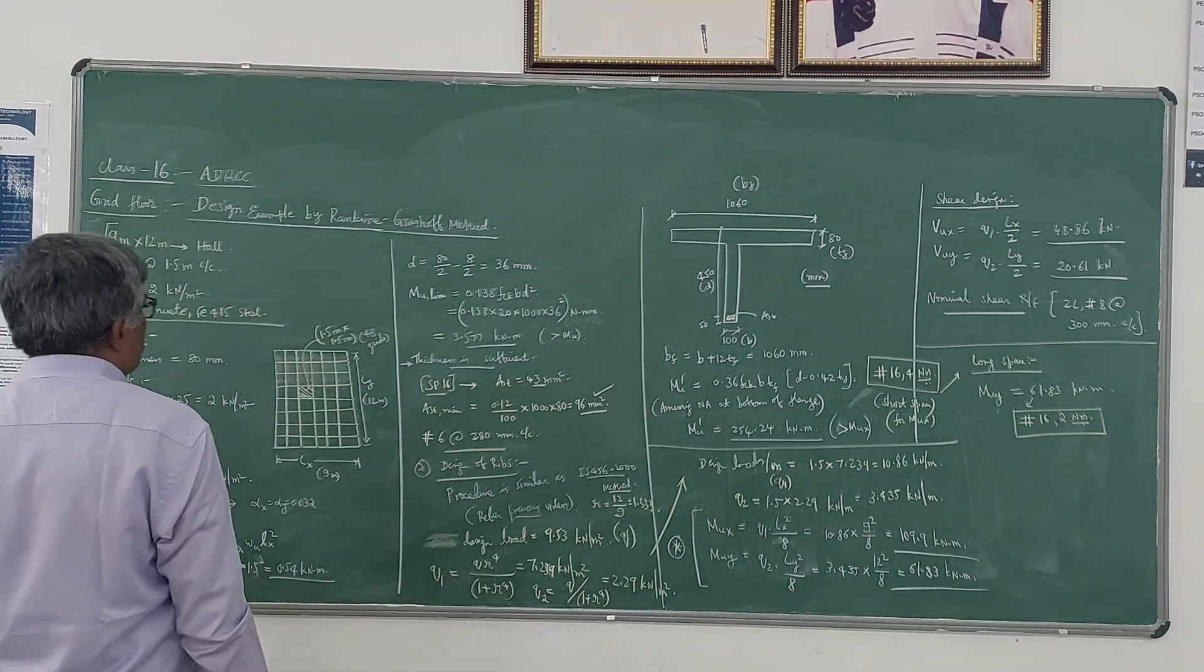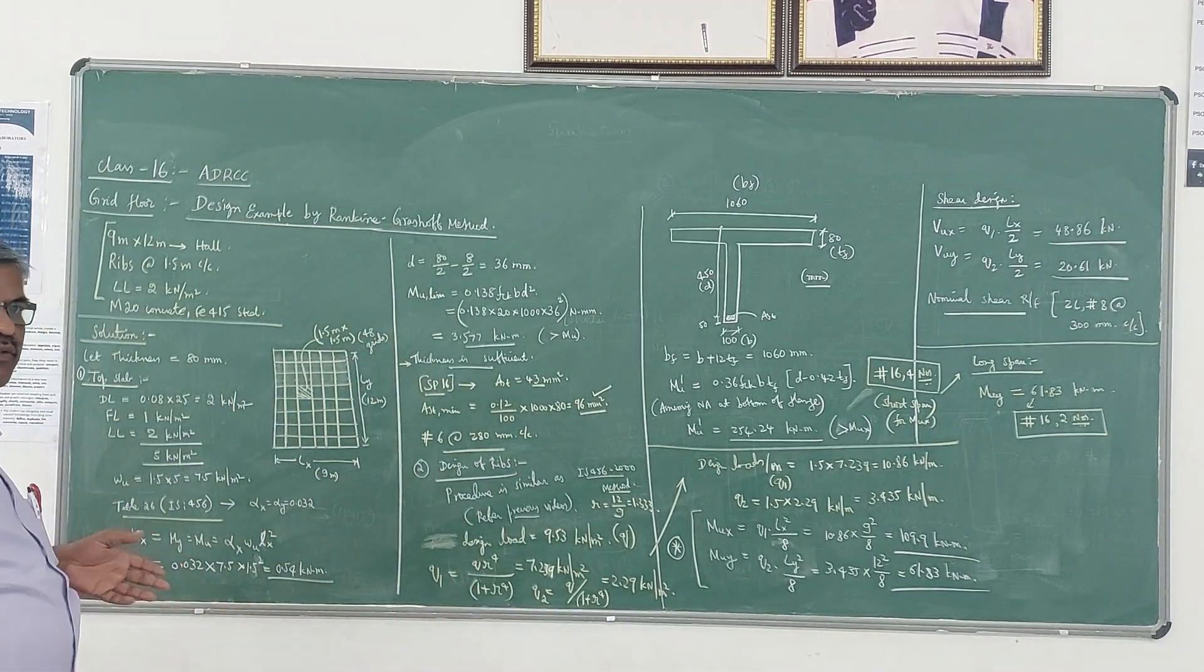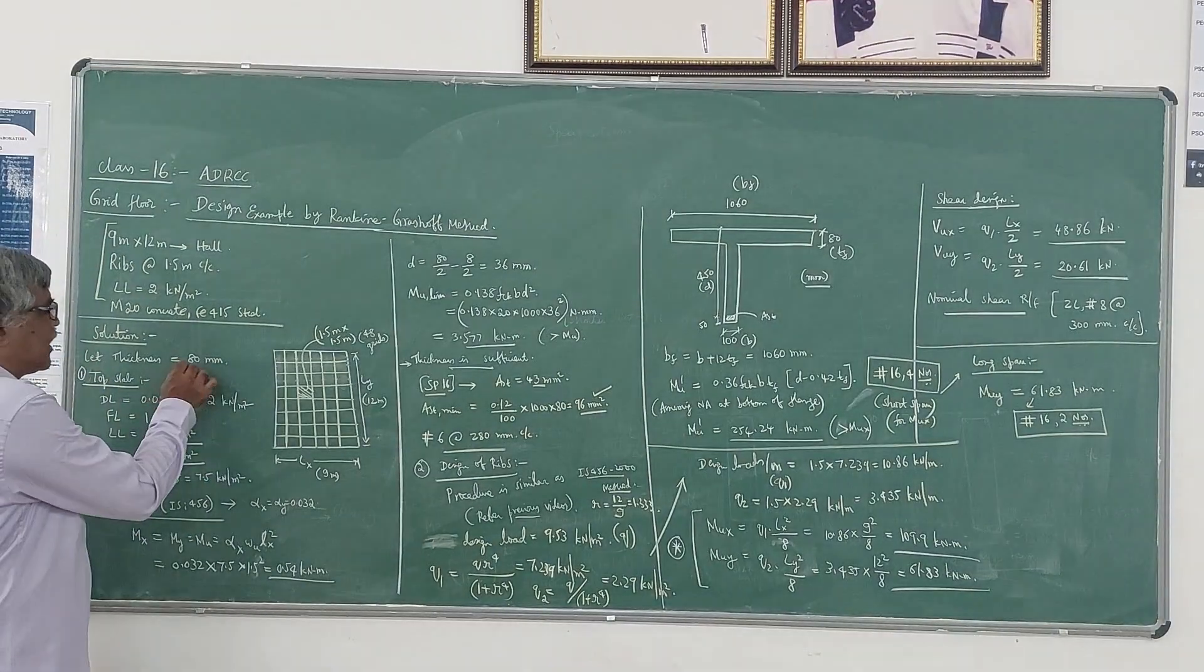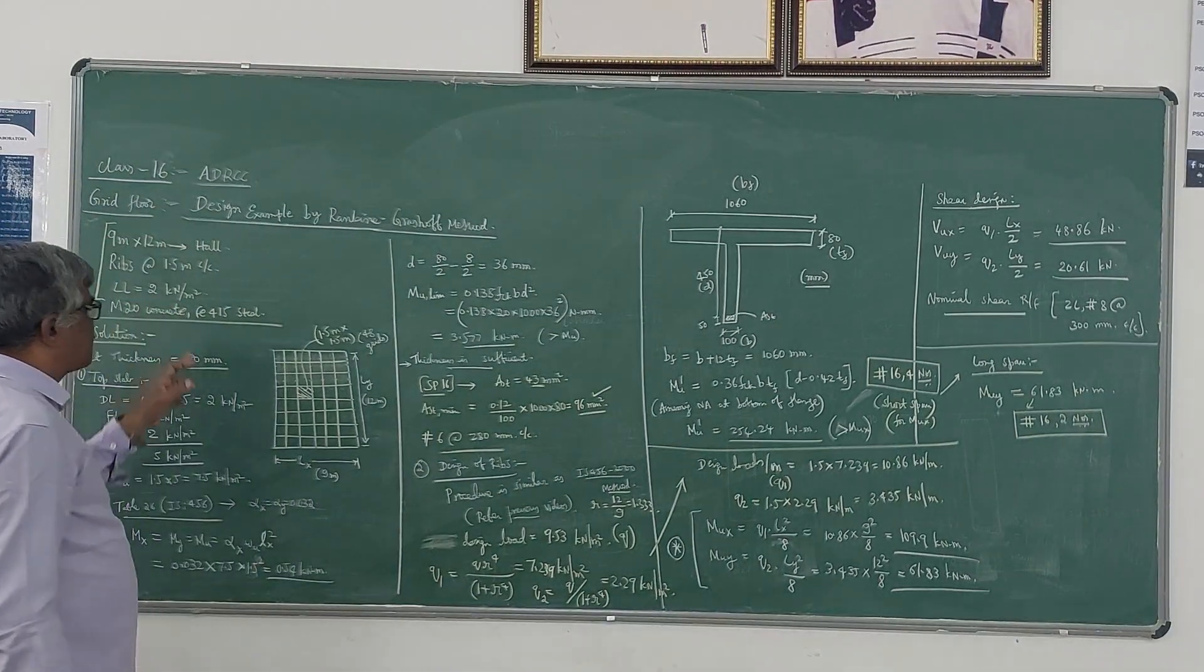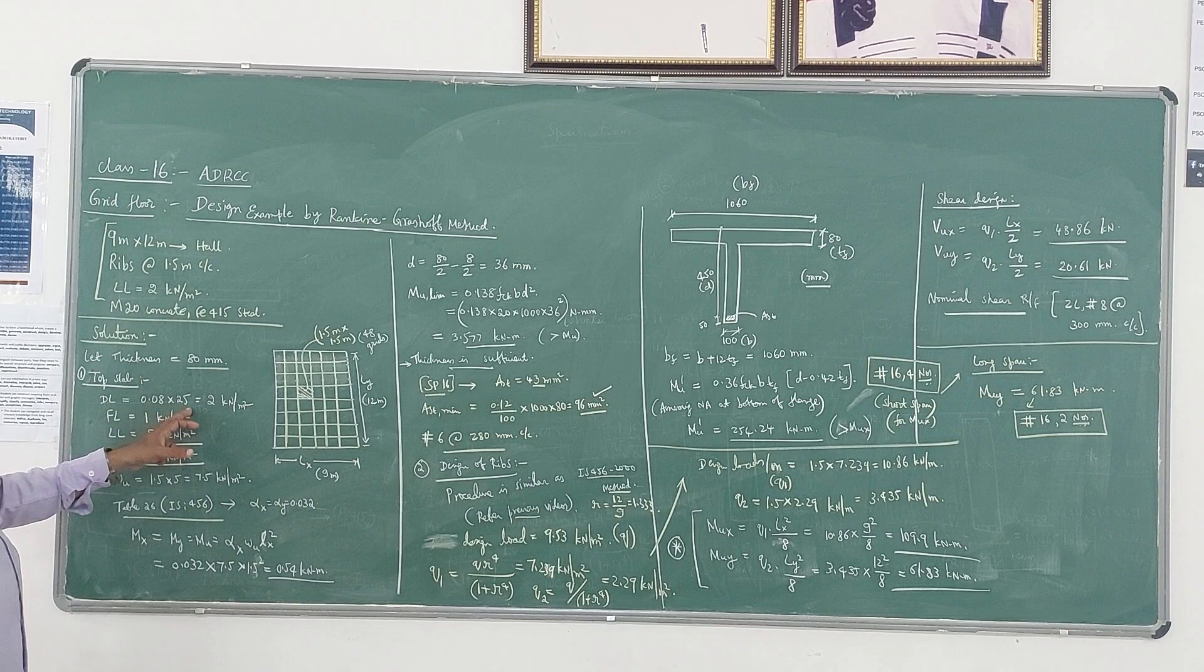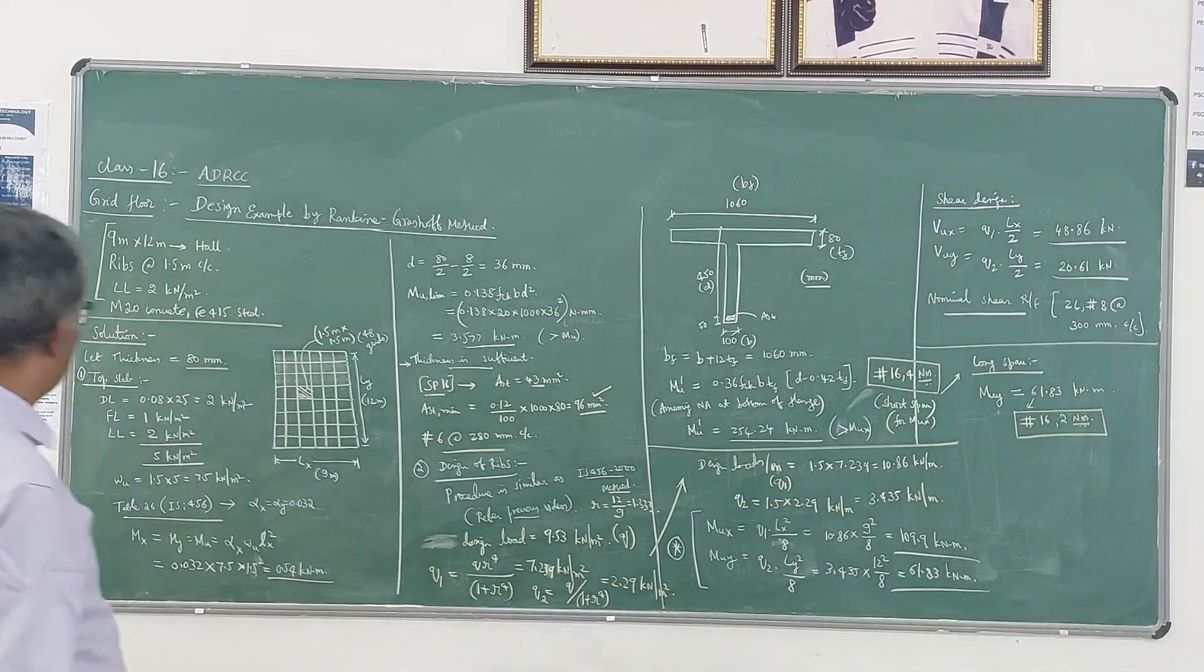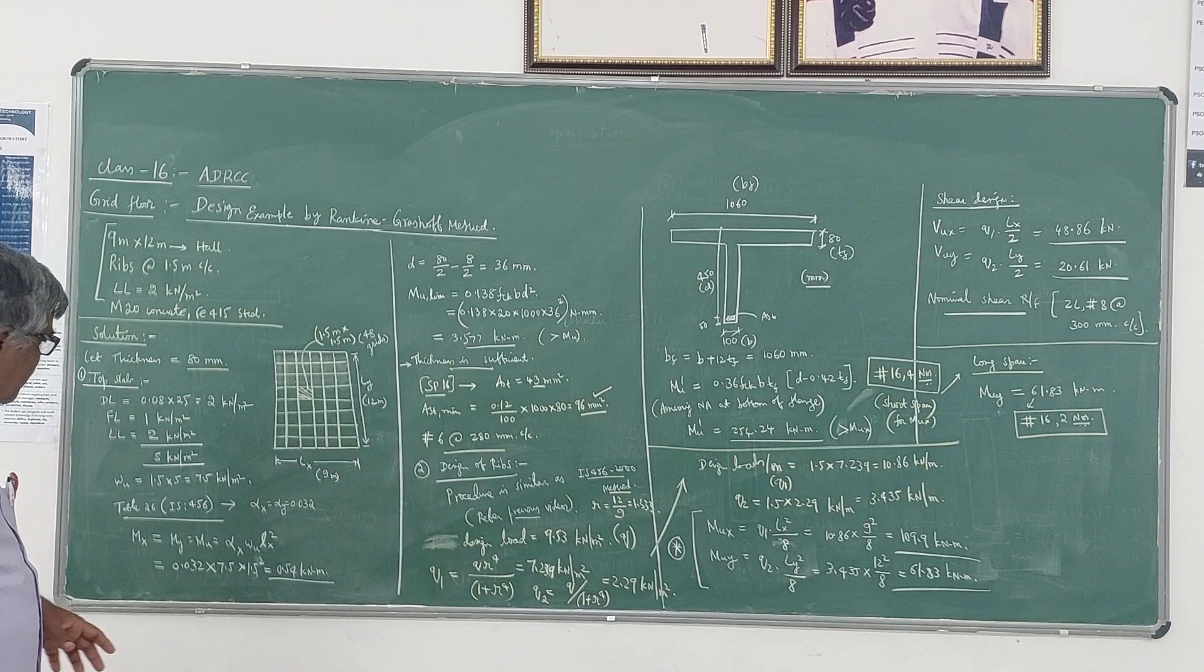We use M20 concrete and Fe415 steel. The design runs similar to the IS456 method described in the earlier two videos. Here I will assume the thickness as 80 mm because the live load is slightly less. Dead load comes out to be 0.08 meter times 25 kilonewton per meter cube density of RCC, which is 2 kilonewton per meter square. Finishing load is 1 kilonewton per meter square, live load is 2 kilonewton per meter square as given. Total load becomes 5 kilonewton per meter square, and the factored load or design load is 7.5 kilonewton per meter square.